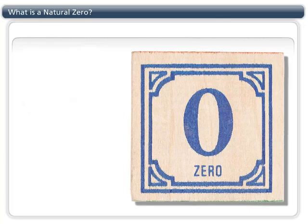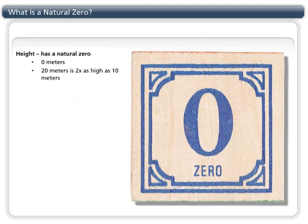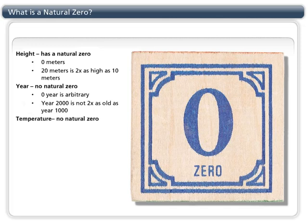Let's talk a bit more about a natural zero to understand the difference between interval and ratio data. A natural zero is a true zero measurement value. Height, for instance, has a natural zero — zero meters has a value; it is the absence of height. In contrast, year or temperature do not have a natural zero. The freezing point of water was chosen as zero degrees and could just as easily be assigned to the boiling point of water.